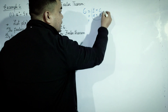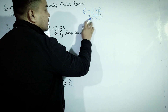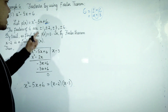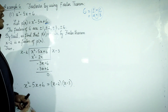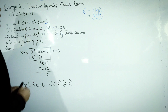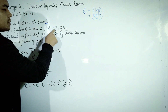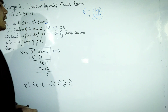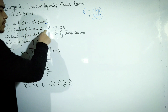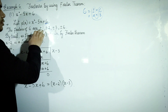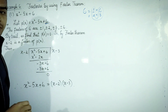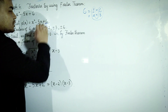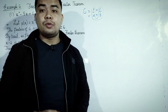We divide 1 into 6 and 2 into 3. The possible values are plus or minus 1, plus or minus 2, plus or minus 3, and plus or minus 6.